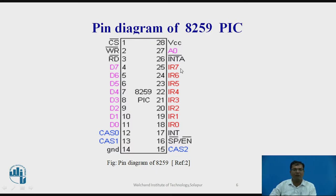Now let us look at the pin diagram of 8259. This is the pin diagram of IC8259. It has a total of 28 pins. Pin number 14 is ground and pin number 28 is VCC. Pin number 1 is chip select, which selects the 8259. Write bar and read bar are active low signals used for writing and reading data to or from the external device. The data lines D0 through D7 are 8-bit in nature.